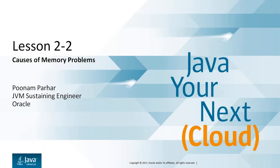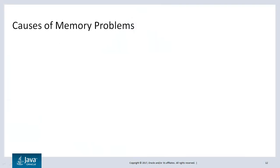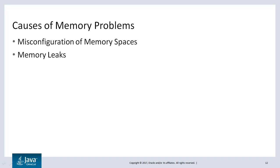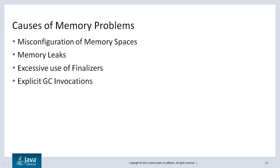In this section we are going to be talking about the common causes of memory problems in Java applications. Some of the causes could be misconfiguration of the sizes of any of the memory spaces, memory leaks in the application, application making excessive use of finalizers, or explicit GC invocation from within the application or using external tools. Let's take a look at each of these causes in detail.